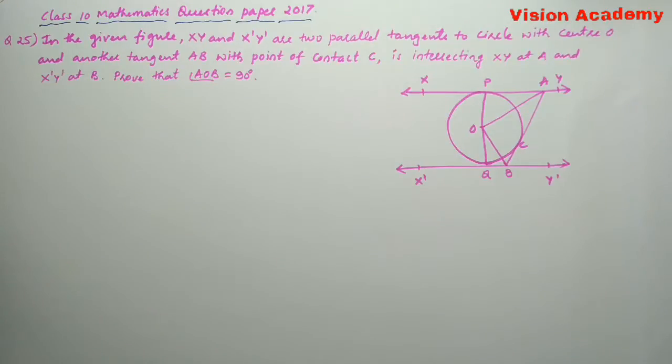In the given figure, XY and X'Y' are two parallel tangents to the circle with center O and another tangent AB with point of contact C is intersecting XY at A and X'Y' at B. Prove that angle AOB is equal to 90 degrees.